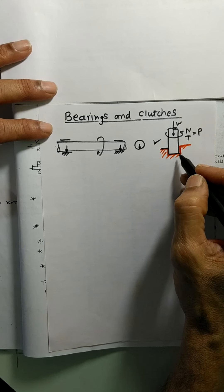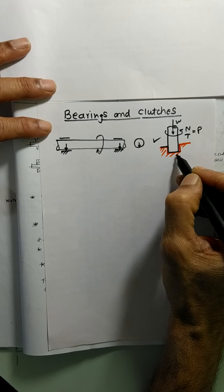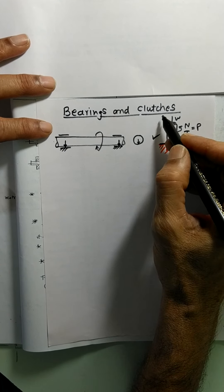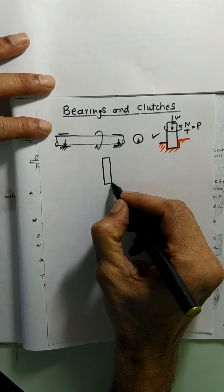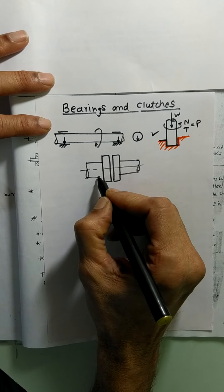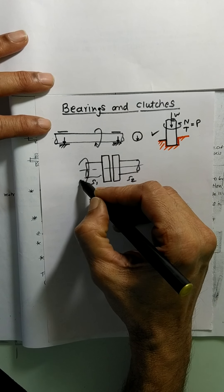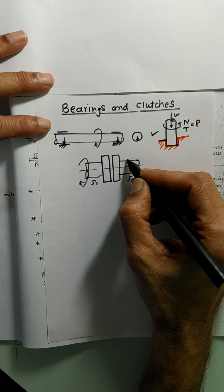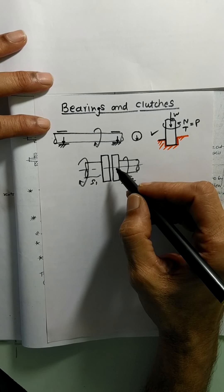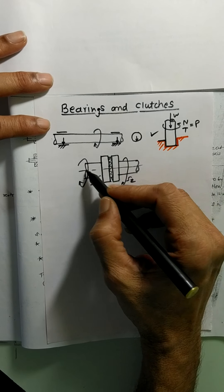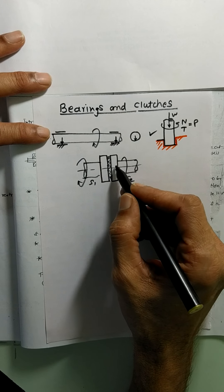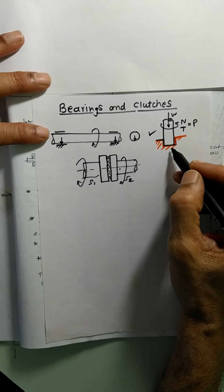How much friction is exerted on the rotating shaft by this bearing surface — that is our matter of concern. We are also talking about clutches. Bearings and clutches are taken together. In the case of a clutch, there are two discs: shaft one, shaft two, with discs at the end. One shaft is rotating, and the moment you bring it in contact, power gets transmitted from one shaft to another through the disc. The friction between these two is responsible for power transmission — so friction is a desirable thing here.